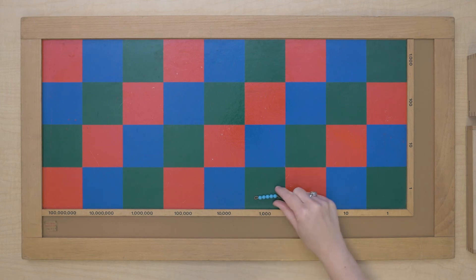So it's the square that tells us the value. The bead bar will tell us the quantity but the square is going to tell us which family it's in, whether it's hundreds or hundred thousands.